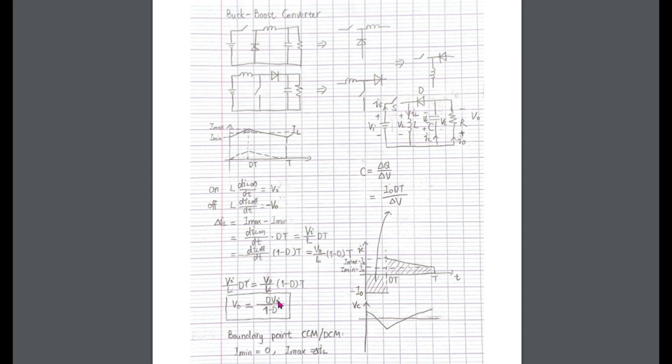To calculate the C, we know that C equals delta Q by delta V. Delta Q is the change of the charge. The capacitor provides the output current when the switch is closed and gets charged by the difference between the inductor current and the load current when the switch is open, same as in the boost converter.